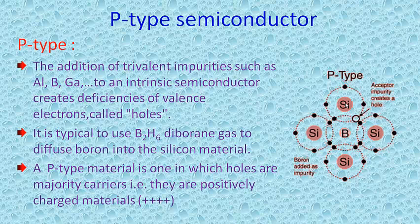Next, P-type semiconductor. Here we add trivalent impurities such as aluminum, boron, and gallium to an intrinsic semiconductor, which creates deficiencies in valence electrons — those deficiencies are called holes. Because of this, the majority carriers in a P-type semiconductor are holes, indicated with a plus symbol, and minority carriers are electrons. Diboron gas can be diffused into silicon material to create P-type semiconductor.